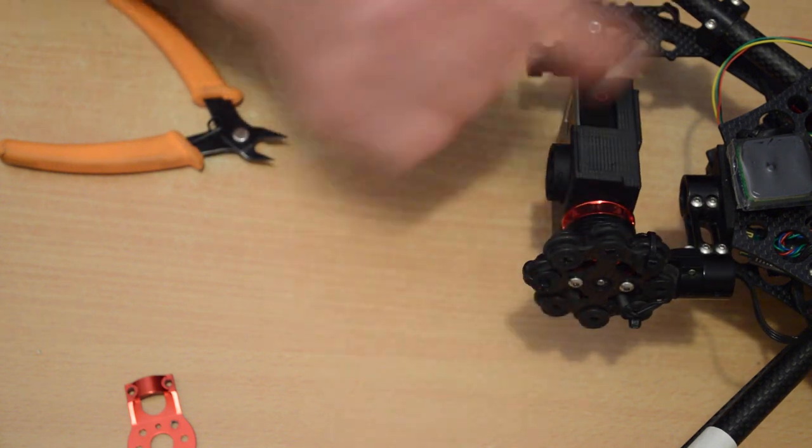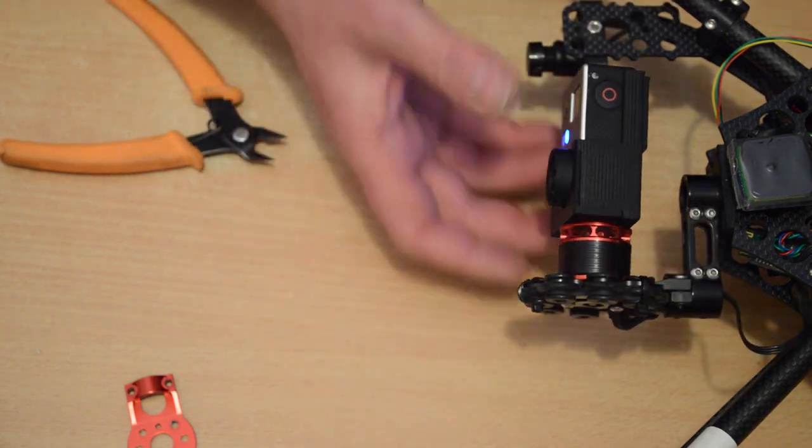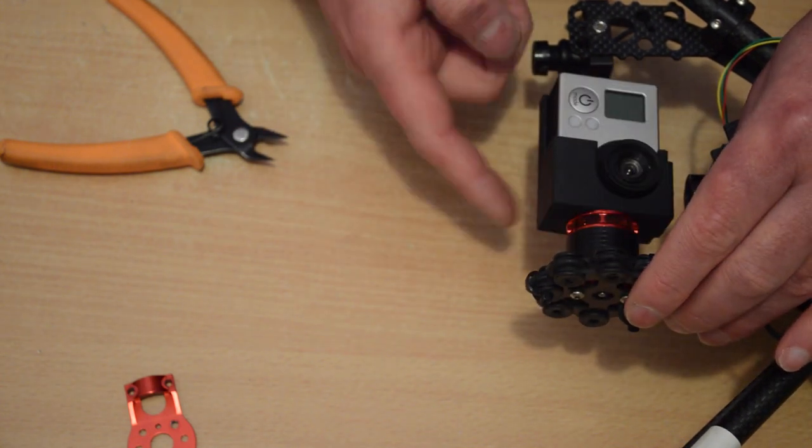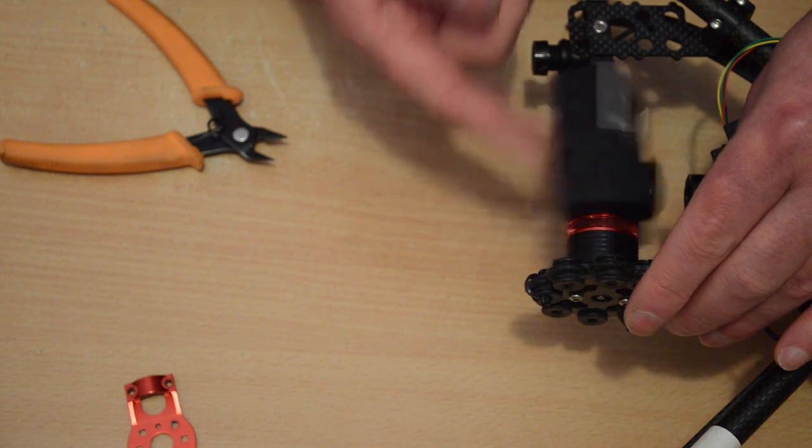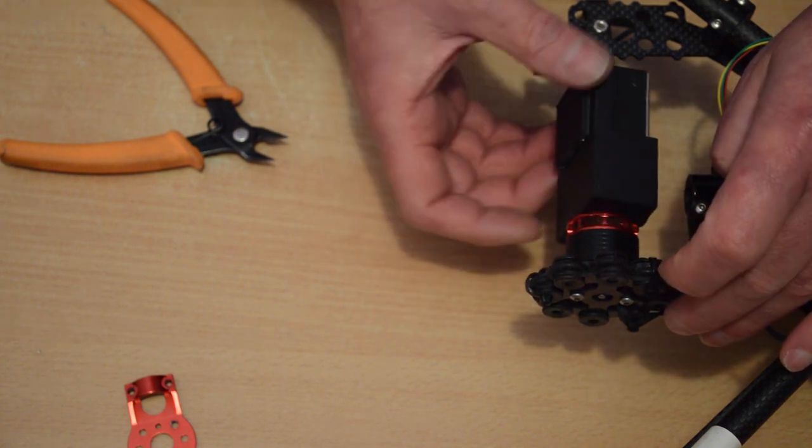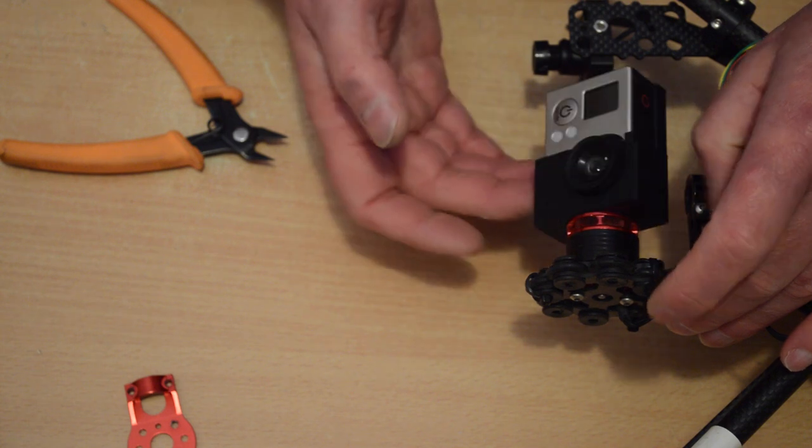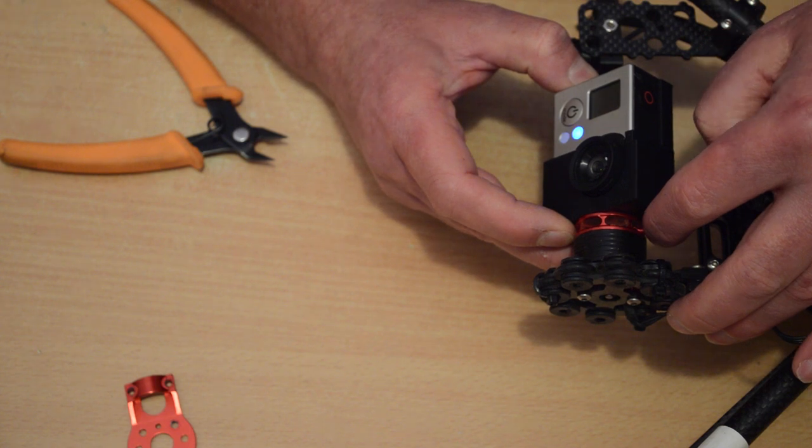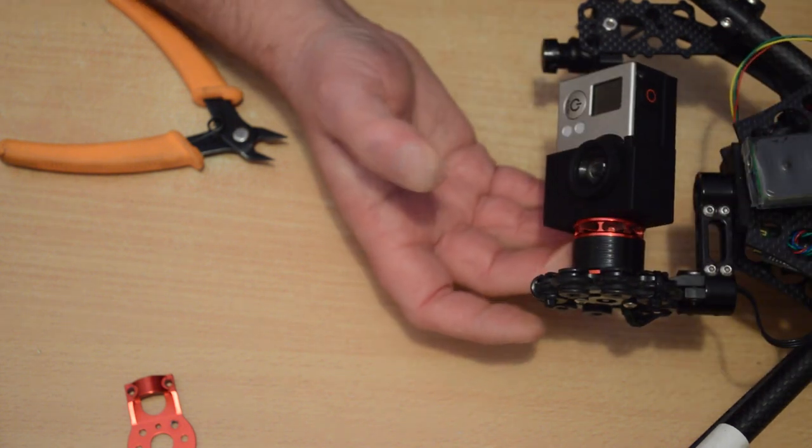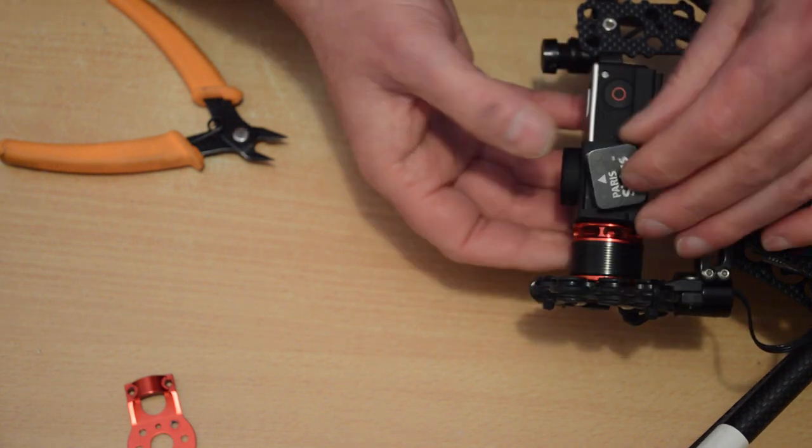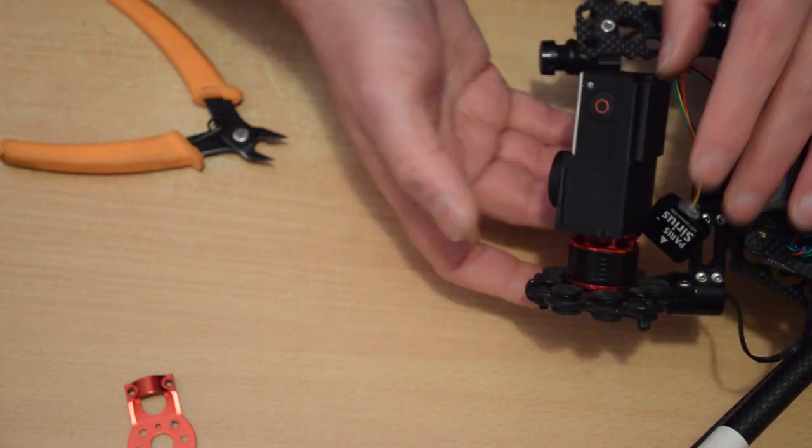I haven't got the sensor on yet so it's not going to be quite right. Now the other way we need to balance the gimbal is in this axis, and as you can see that's pretty much it. Now if anything, you want it to be a little bottom heavy, so that the bottom of the gimbal is dominant, because I'm about to put a weight, the sensor, on the top of this, and that's going to change the balance a little.